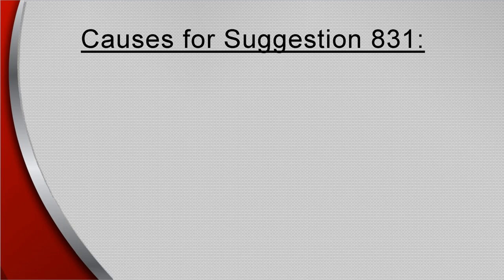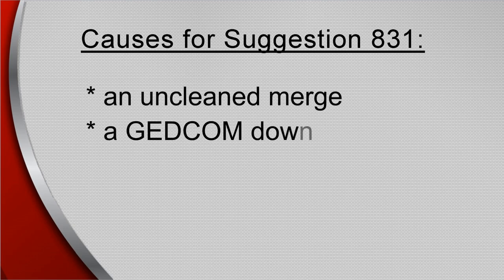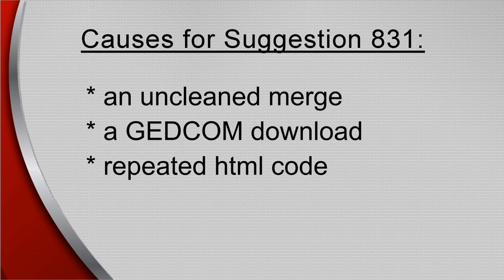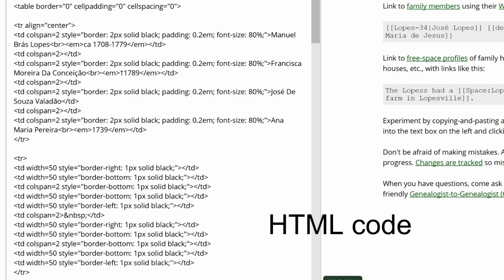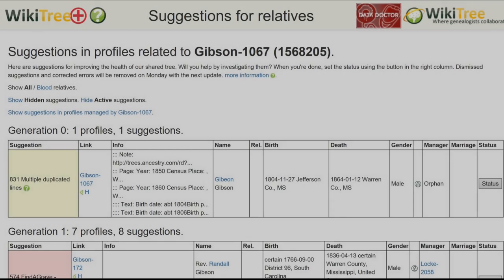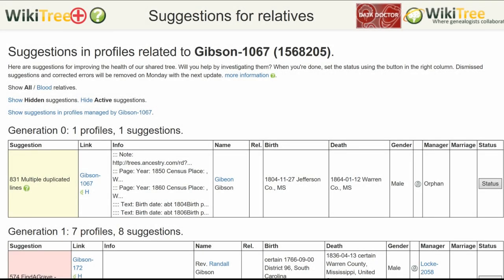Suggestion 831 is triggered when text is repeated throughout the profile. This can occur from an uncleaned merge, a GEDCOM download, or repeated HTML code. Here is the Suggestion Report for Gibeon Gibson, which only shows one suggestion: 831.